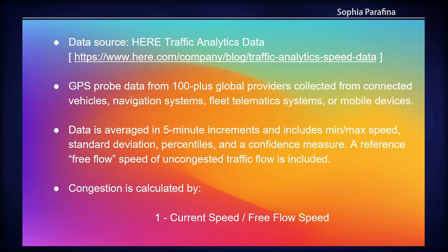One of the things we do is calculate congestion, which is used for road planning — basically one minus the current speed divided by free flow speed. To translate that into a realistic measure: if it takes 10 minutes to arrive at a destination and you have a 0.3 congestion, that adds an extra three minutes to your travel time.